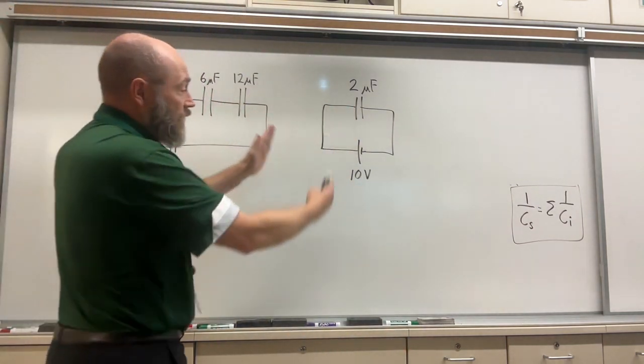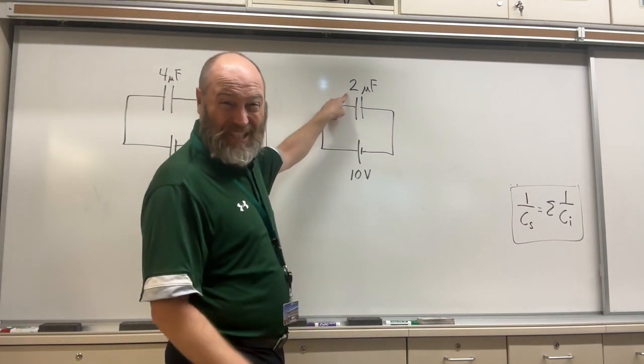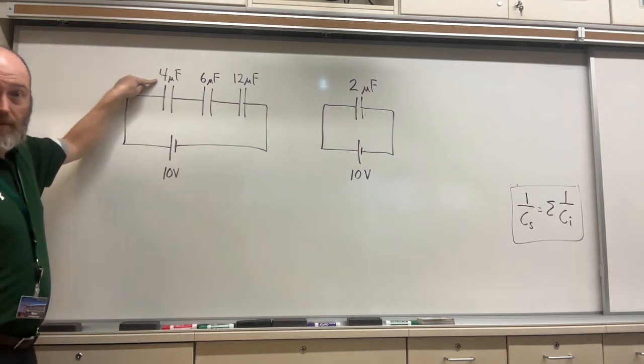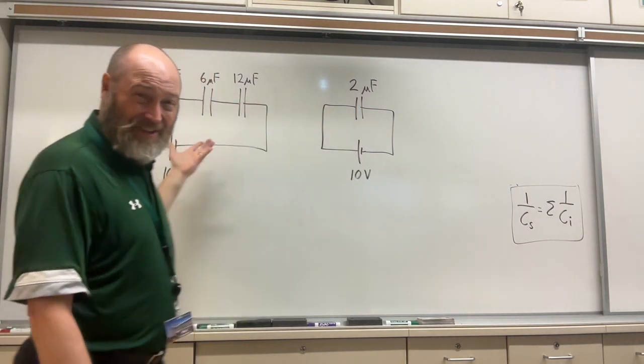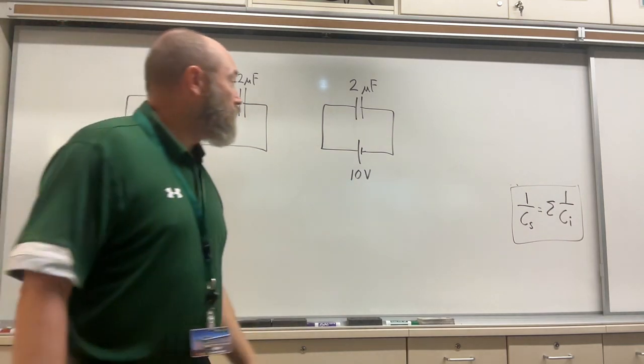When you add more capacitors in series, the total capacitance goes down. So this number has to be smaller than that number, because that was my smallest one. So if my total has to be smaller than when you add them, it has to be smaller, well, it has to be smaller than four. So we can check that.